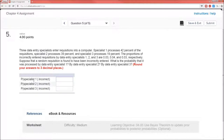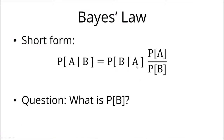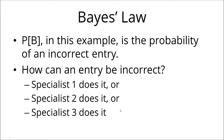We're given the probability of incorrect given specialist one — B stands for error and A stands for specialist one. We are also given the probability of specialist one. The big question is: what's the probability of an error in general, given no additional information? How can an entry be incorrect? It can be incorrect if specialist one does it, or specialist two does it, or specialist three does it.